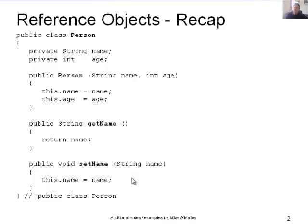We've got no validation occurring at the moment, so the person could be set to a negative age for example, and we've got no validation on name. We could also add getAge, setAge, a toString method, and various other things as well. There's lots we could add, but it's just a start — the sort of class you've created many times already throughout this term.